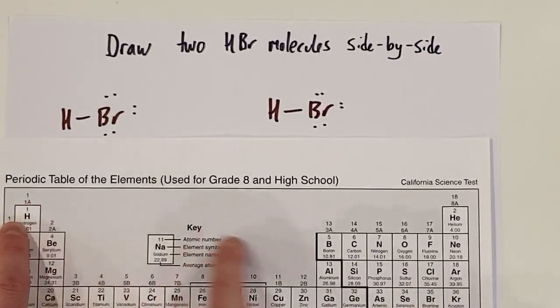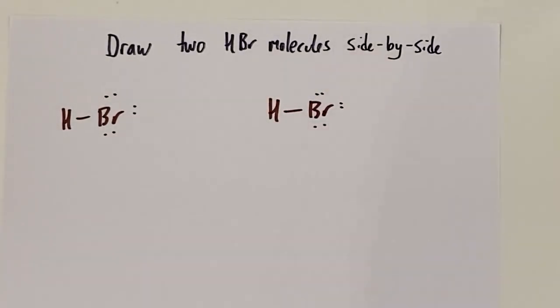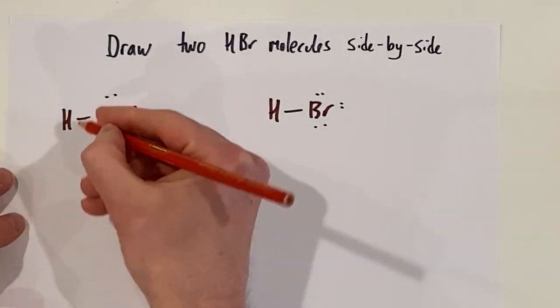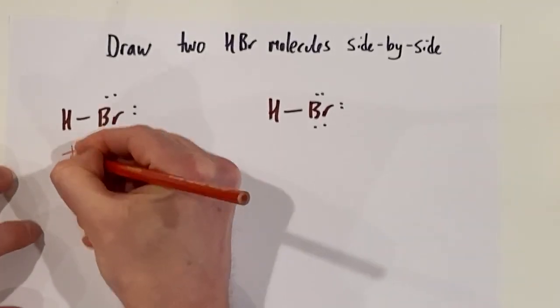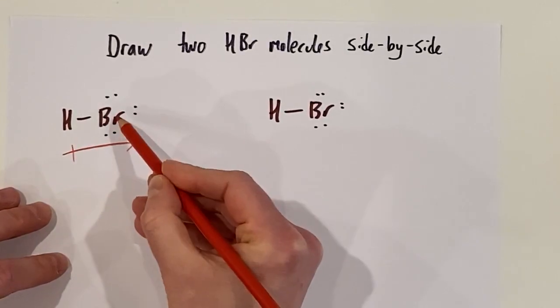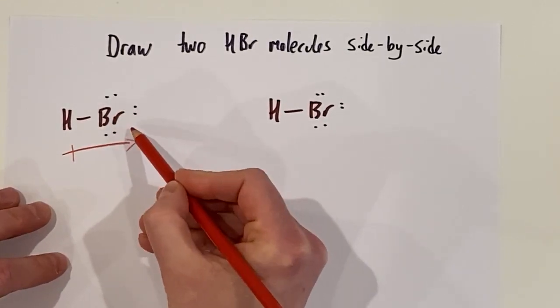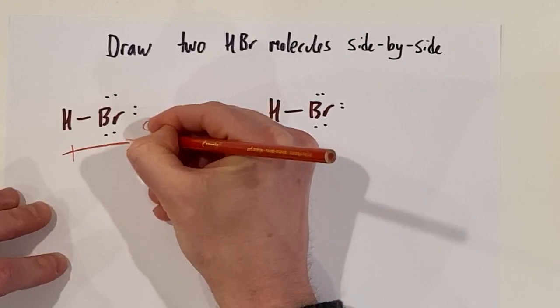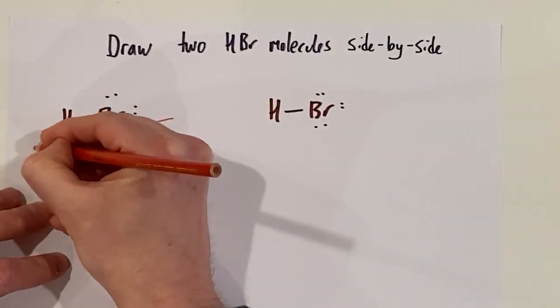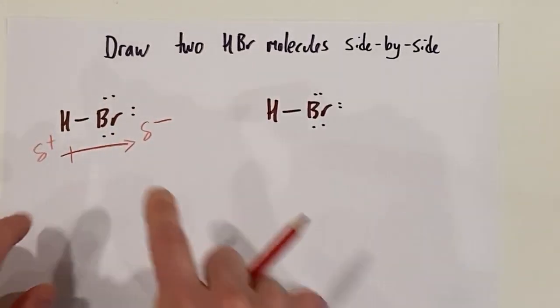We are going to draw a polarity arrow towards bromine on our diagram here. If bromine is going to have the electrons pulled towards it, electrons are negative. Bromine will get a partial negative charge. Hydrogen, partial positive charge.